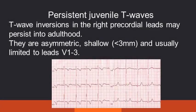Persistent juvenile T waves: T wave inversions in the right precordial leads may persist into adulthood, but they are asymmetric, shallow, and usually limited to leads V1 to V3.